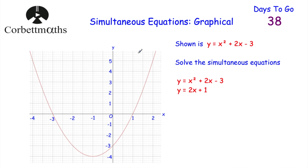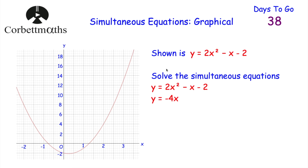Now let's look at our next question. This time, rather than two linear equations, we've got a quadratic and a linear. We've been given a quadratic graph with equation y equals x squared plus 2x minus 3, and we've been asked to solve the simultaneous equations y equals x squared plus 2x minus 3 and y equals 2x plus 1. Feel free to press pause and try this question yourself.